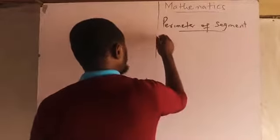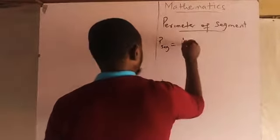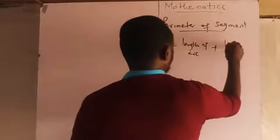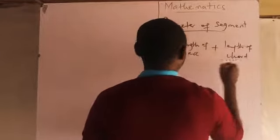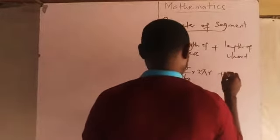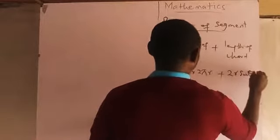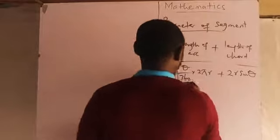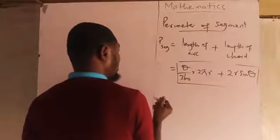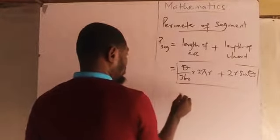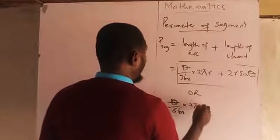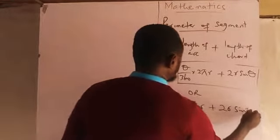The perimeter of a segment is equal to the length of arc plus the length of chord. That would be: θ/360 × 2πr + 2r·sin(θ/2). You can use this formula for the length of arc. Remember that if you are dealing with a circle where the central angle subtends to any point on the circumference, you will be using the formula: θ/360 × 2πr + 2r·sin(θ/2).